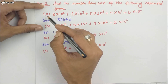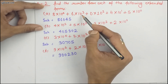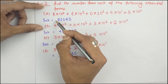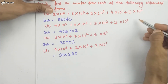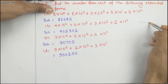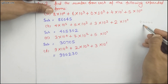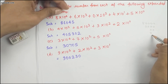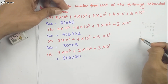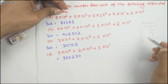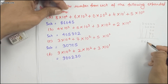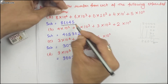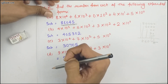Part (a) says: 8 into 10 to the power 4, plus 6 into 10 to the power 3, plus 0 into 10 to the power 2, plus 4 into 10 to the power 1, plus 5 into 10 to the power 0. On converting this, 8 into 10 to the power 4 gives us the ten-thousands place, then 6, 0, 4, 5 follow — so the answer is 86045. Parts (b), (c), and (d) you should do yourself and check whether your answers match.